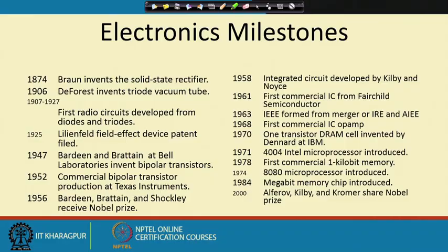We will see one such microprocessor in this course — the 8085 — which is a bit improved version over the 8080. In 1984, the megabit memory chip was introduced, so memory capacity went up. Because of this we can now store lots of memory. Today storage is not a problem because memory chips have advanced so much that even the tiniest devices in our day-to-day life have large amounts of memory.